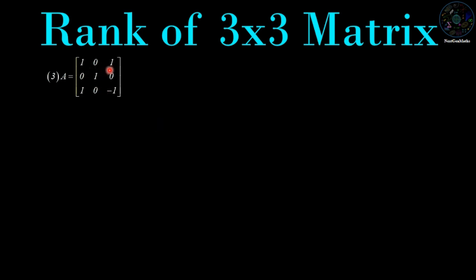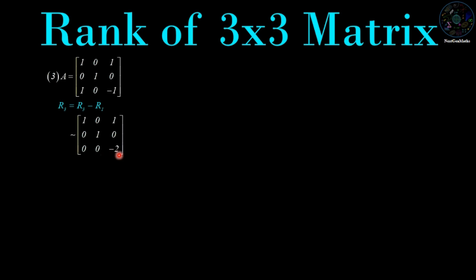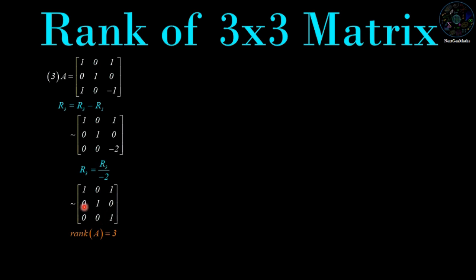Example 3: A = [1, 0, 1; 0, 1, 0; 1, 0, -1]. Apply row operation R3 = R3 - R1, giving [1, 0, 1; 0, 1, 0; 0, 0, -2]. Then apply R3 = R3 / (-2), giving [1, 0, 1; 0, 1, 0; 0, 0, 1]. This is the row echelon form of the matrix, which contains 3 non-zero rows, therefore rank of A is equal to 3.